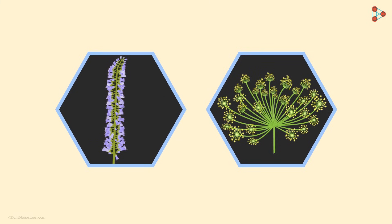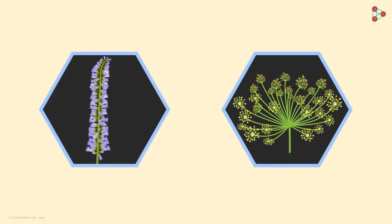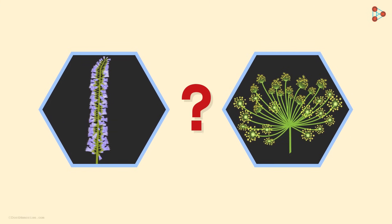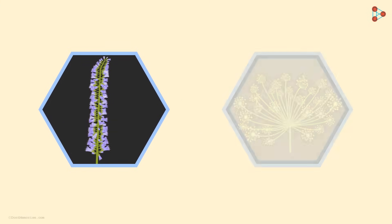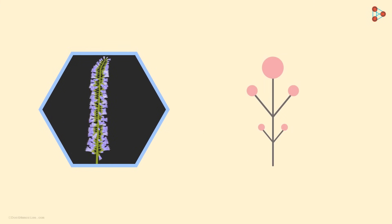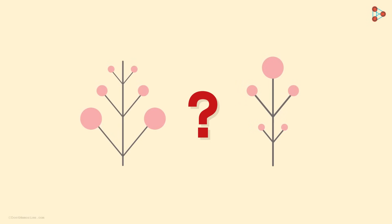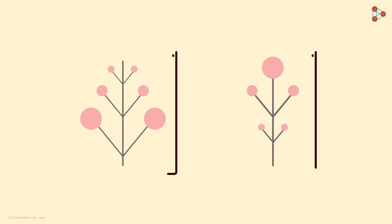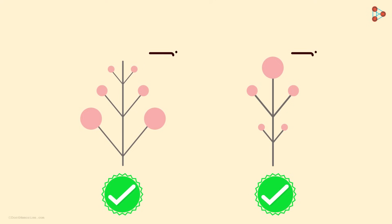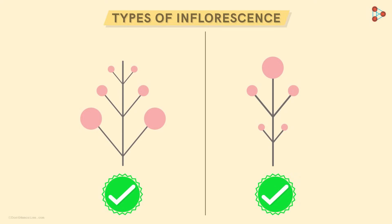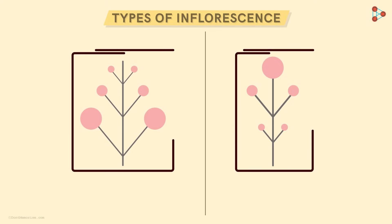Now, will the structure of flowers at the apex form an inflorescence, or the ones arranged along the stem? Will this be called inflorescence, or this? To our astonishment, both of these are inflorescence. Let's understand these types in detail.